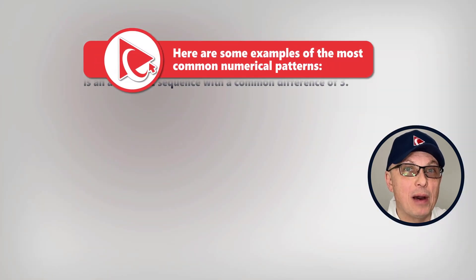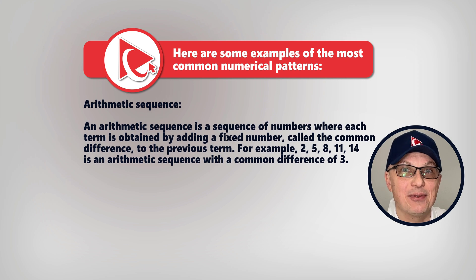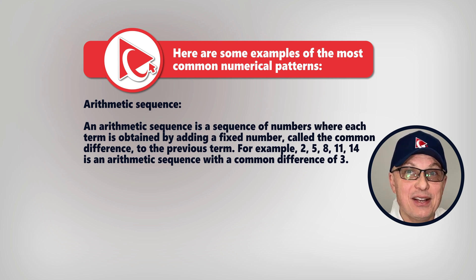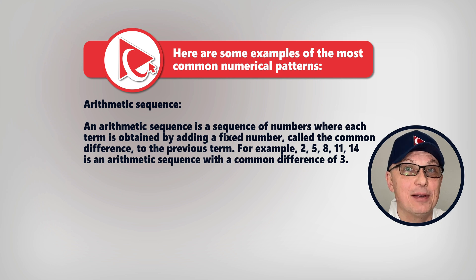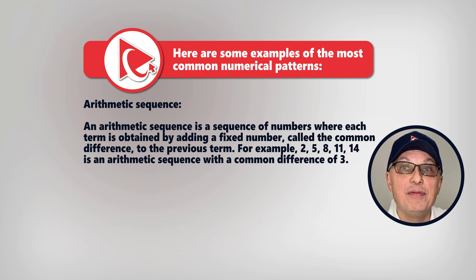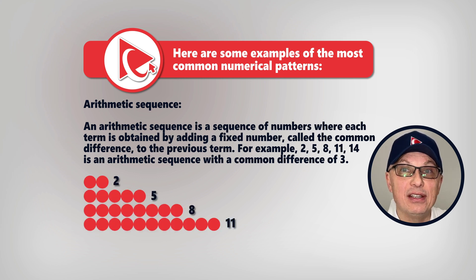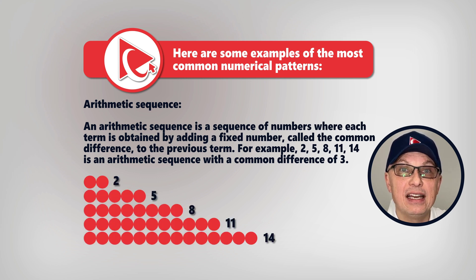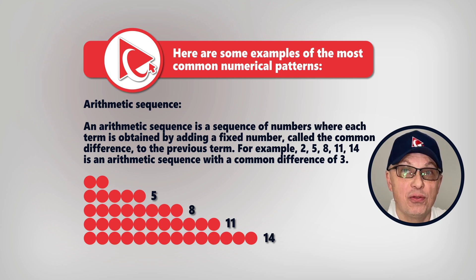One of the most popular patterns is arithmetic sequence. The arithmetic sequence is a sequence of numbers where each term is obtained by adding a fixed number called the common difference to the previous term. For example, numbers 2, 5, 8, 11, and 14 represent an arithmetic sequence with a common difference of 3.